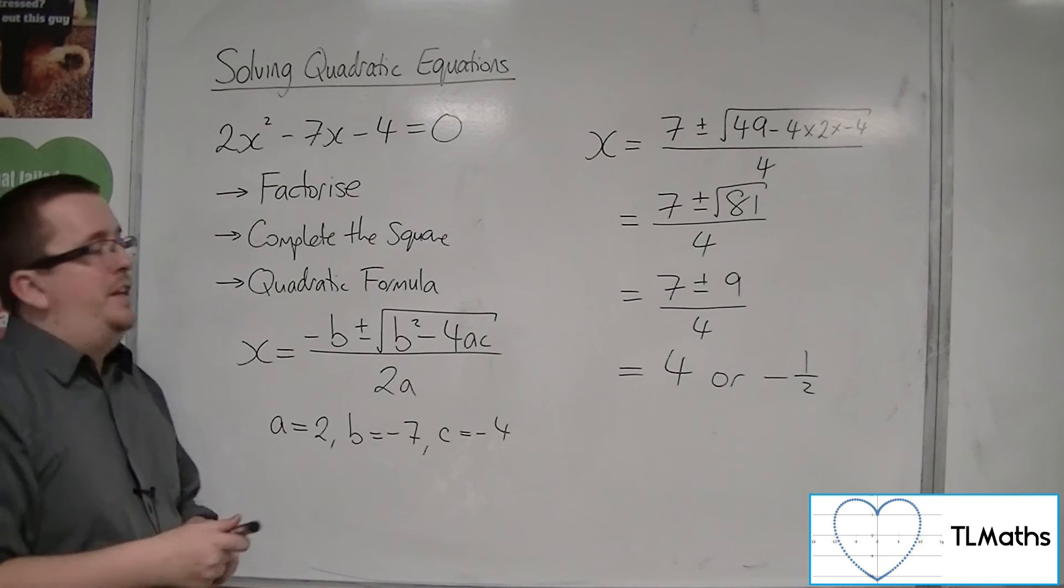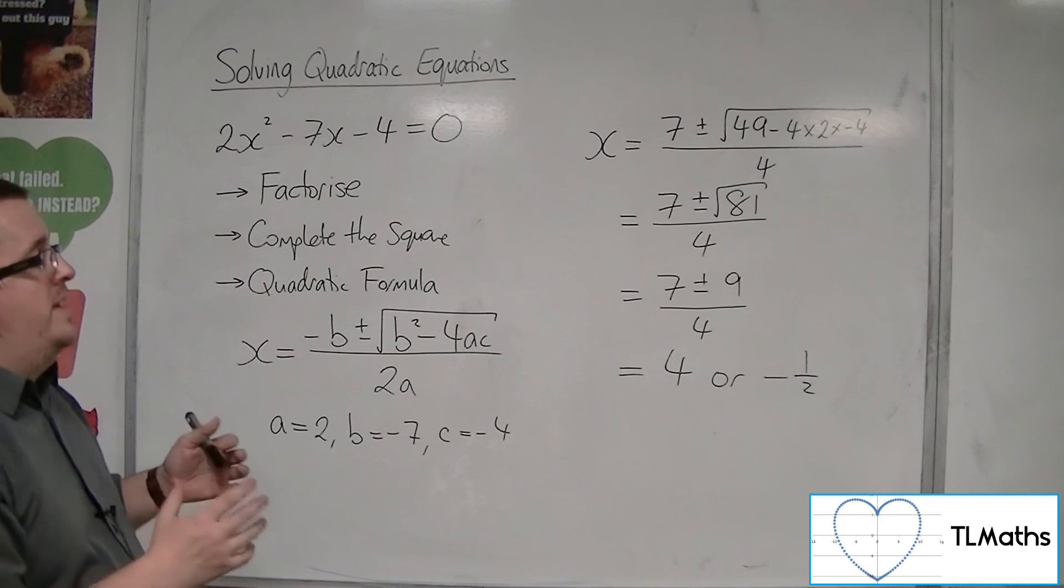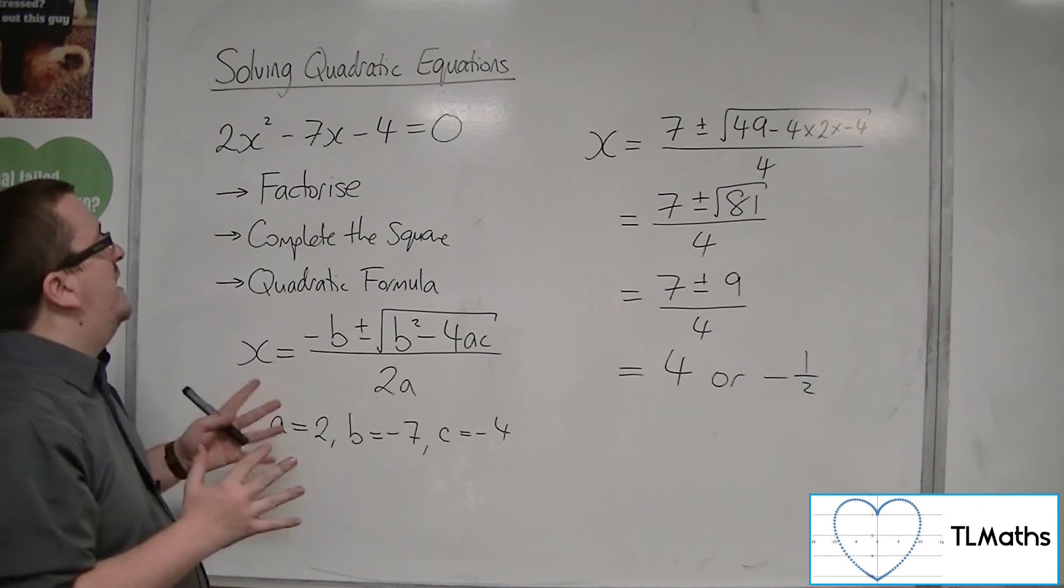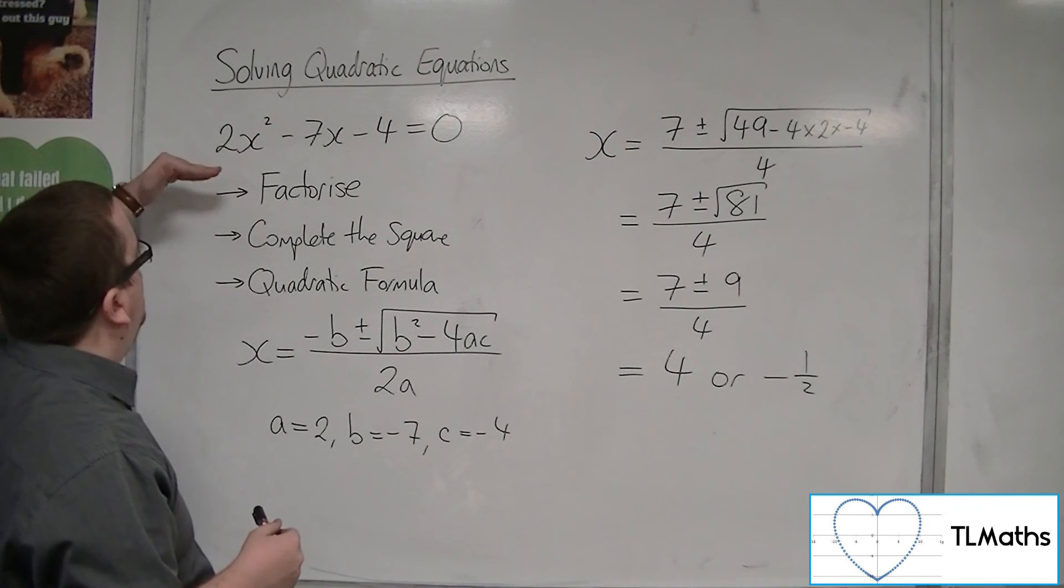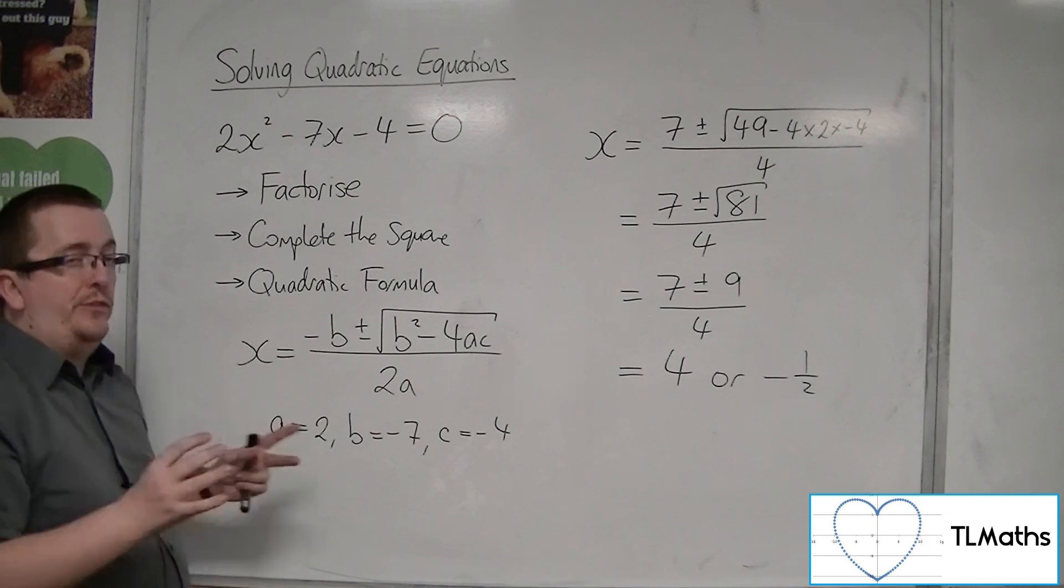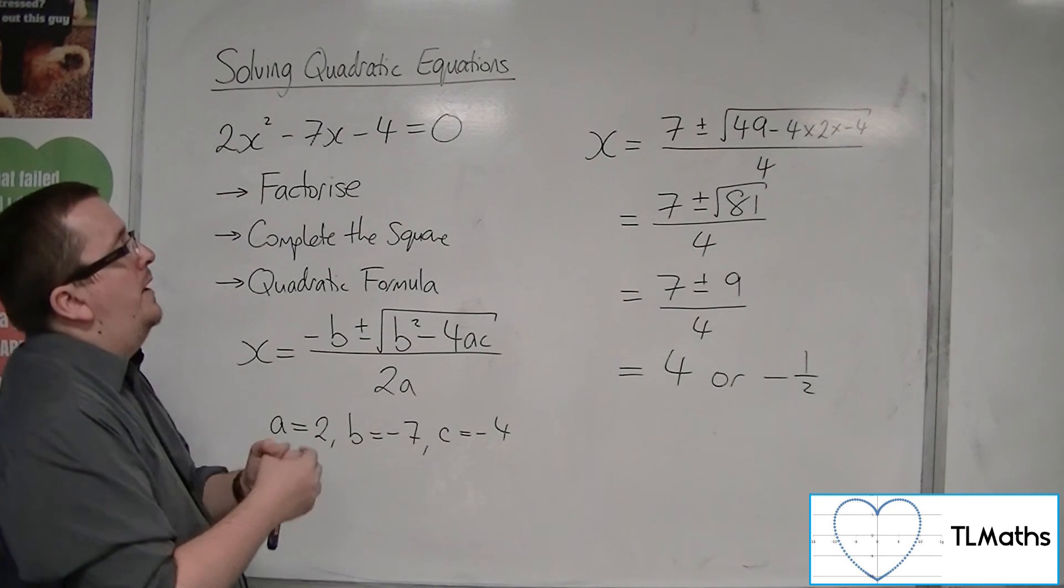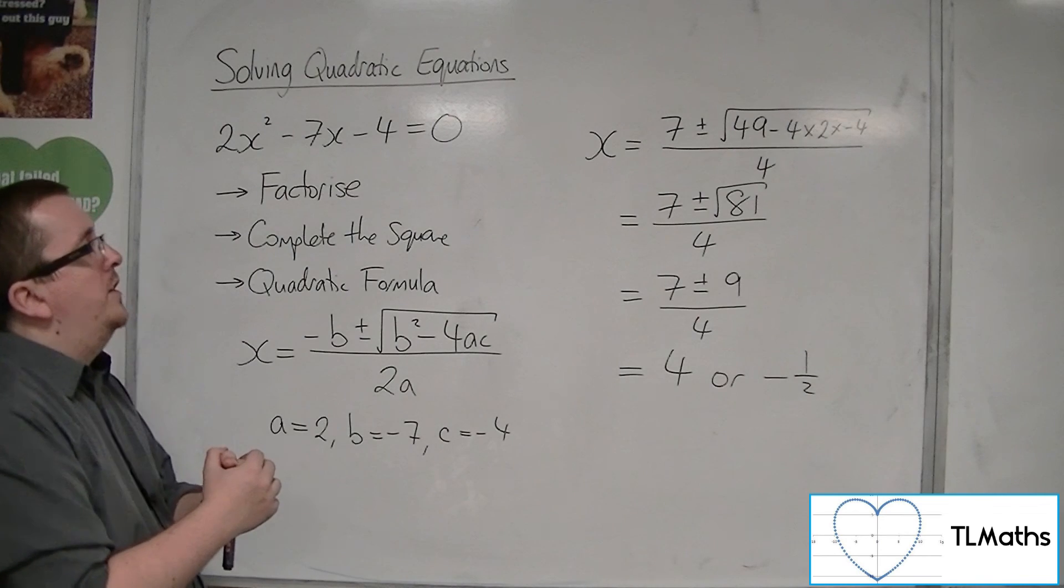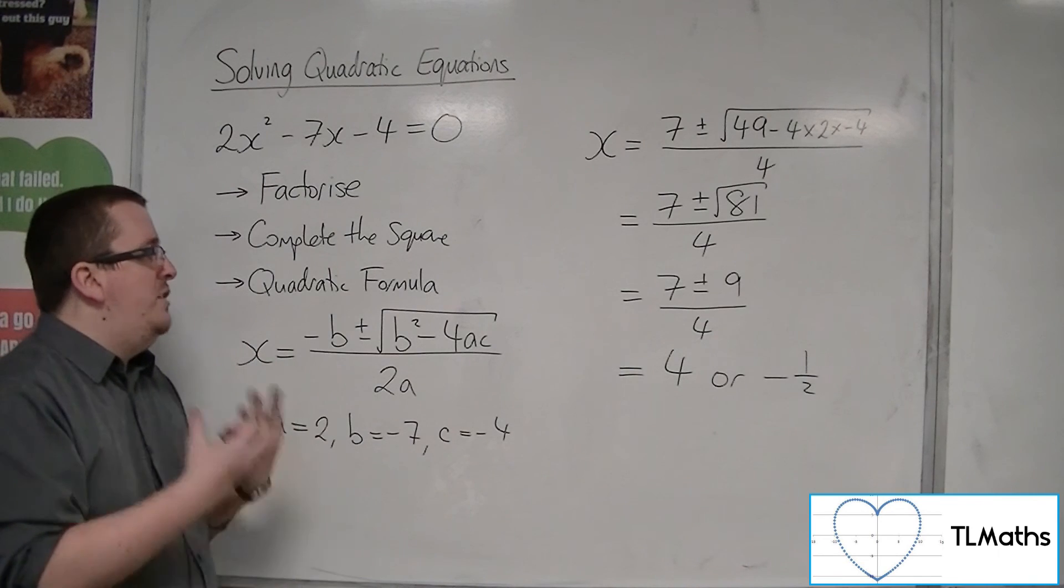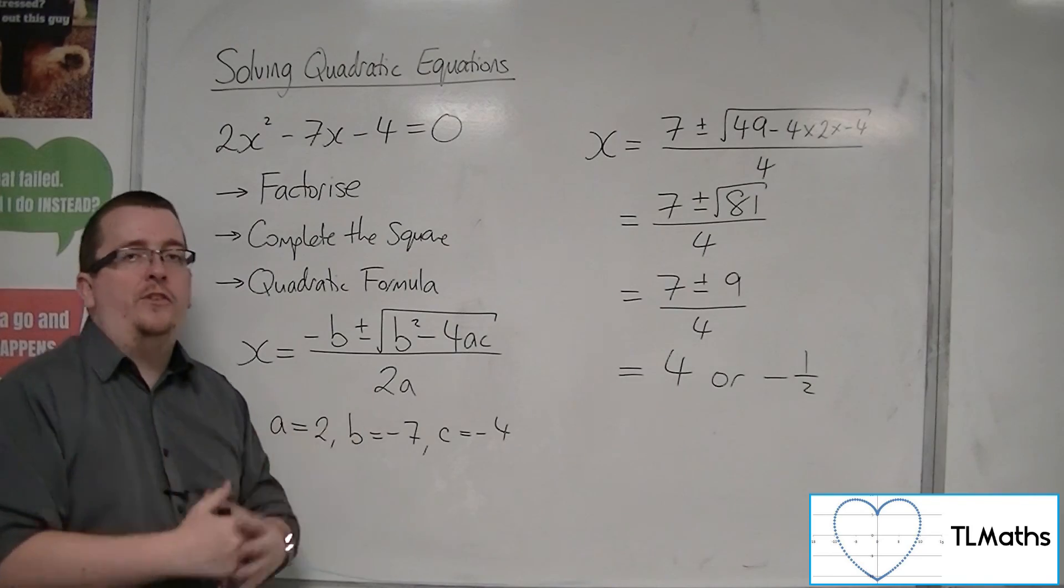So that's a lot quicker than using the completed square form. And in all three cases, we've got to precisely the same answer. So really, when it comes down to it, if you need to show your working, it is really up to you which way you solve a quadratic. I would usually check for factorising first. But in the end, if factorising doesn't work, I usually go straight to the formula, unless it is already written in completed square form. Only then do I actually solve it that way.